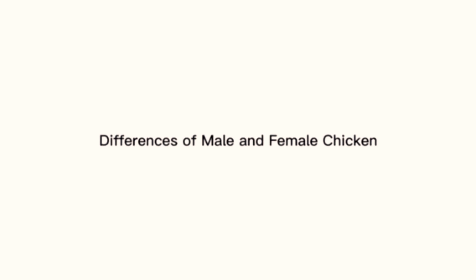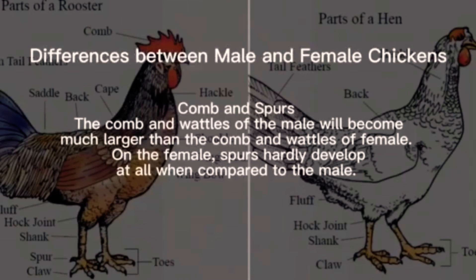The differences between male and female chickens. Comb and spurs: the comb and wattles of the male will become much larger than the comb and wattles of a female, and the female's spurs hardly develop at all when compared to the male.